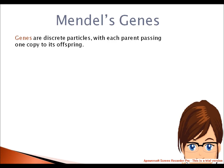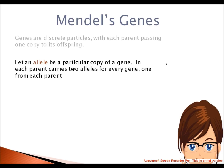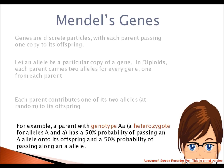On the basis of hybridization experiments on Pisum sativum, Mendel proposed the principles of inheritance known as Mendel's laws. Genes are discrete particles, with each parent passing one copy to its offspring. Each parent carries two alleles for every gene, one from each of their own parents. Each parent contributes one of its two alleles at random to its offspring. For example, a parent with genotype Aa — the heterozygote for alleles A and a — has a 50% probability of passing the A allele and a 50% probability of passing the a allele onto its offspring.